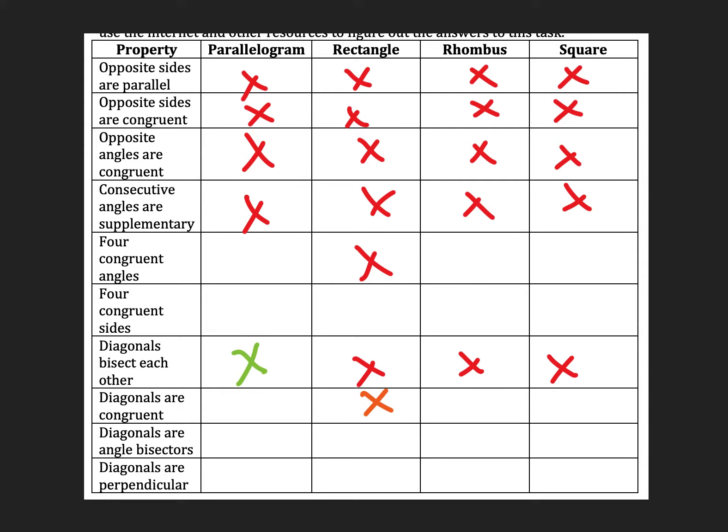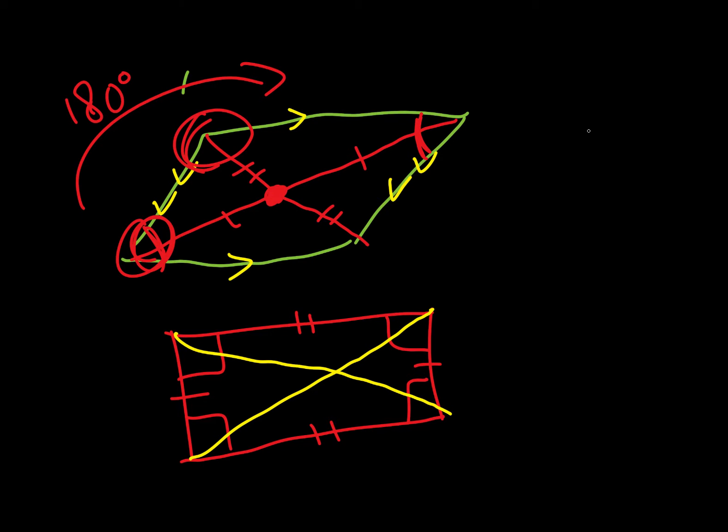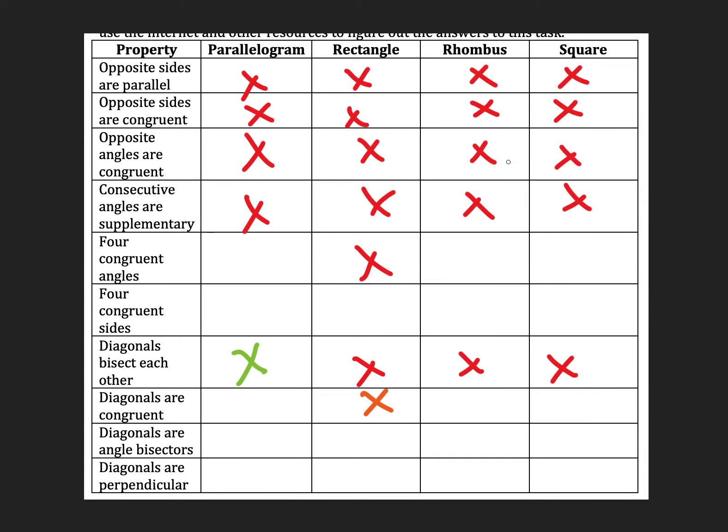So now we're going to move on to rhombus, and rhombus is almost always drawn like a diamond. So rhombus is defined as having four congruent sides. It doesn't necessarily have four congruent angles, so I won't mark that.